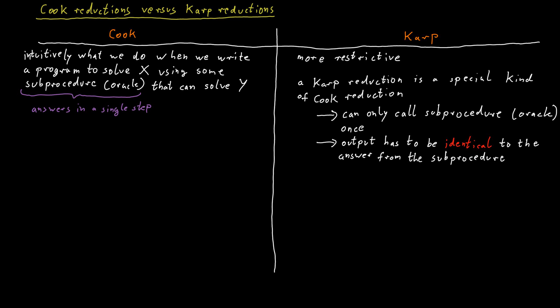Karp reductions and Cook reductions are good for different things. Cook reductions more intuitively reflect how we would program. They are very useful when we are dealing with undecidability, so we can use them to establish that problems are undecidable. And also observe that Cook reductions can deal with computational problems which are not decision problems.